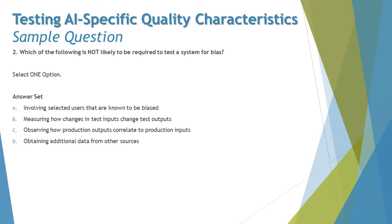Option B — measuring how changes in test input change the test outputs — is a valid method because it shows how the system is biased toward or against particular inputs. Option C — observing how production outputs correlate to production inputs — is also valid, as different results in production may reveal bias. Option D — obtaining additional data from other sources — is essential when bias is based on hidden variables.